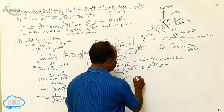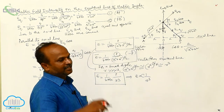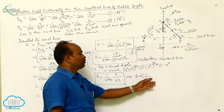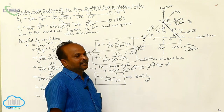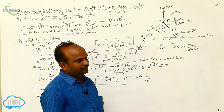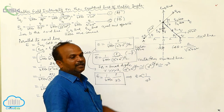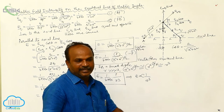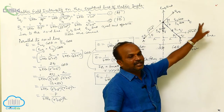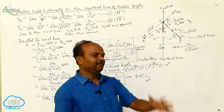Here, electric field intensity is inversely proportional to r cube. In the case of a point charge, electric field intensity is inversely proportional to the square of the distance, but in the case of a dipole, it is inversely proportional to the cube of the distance. The major difference is the direction: on the axial line, the field is from negative charge to positive charge along the axial line, whereas on the perpendicular bisector (equatorial line), the field is parallel to the axial line but from positive charge to negative charge.